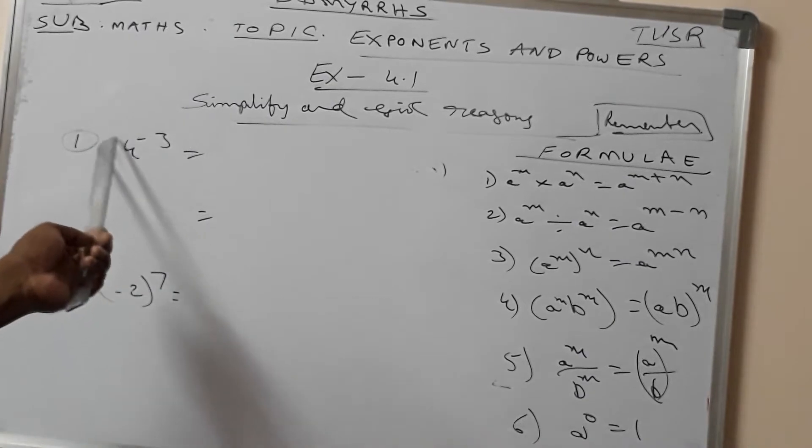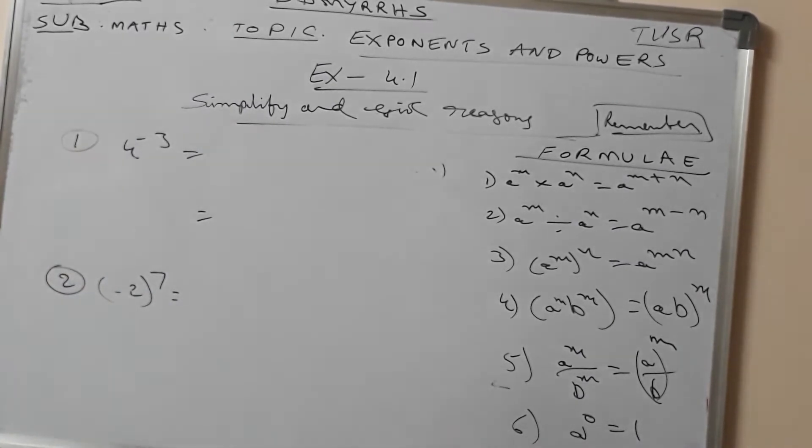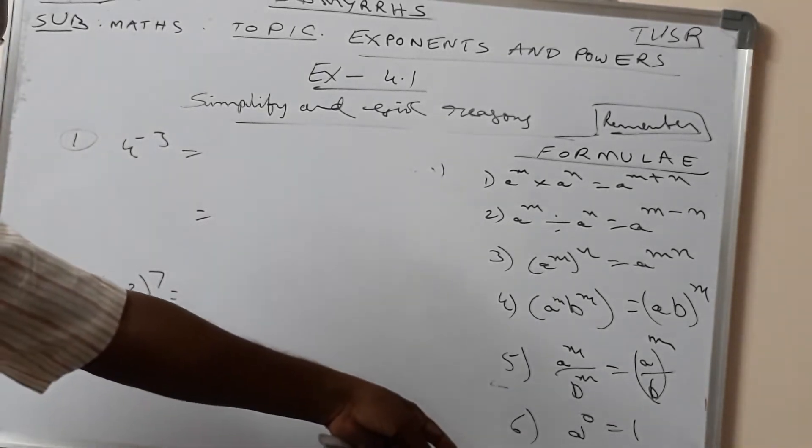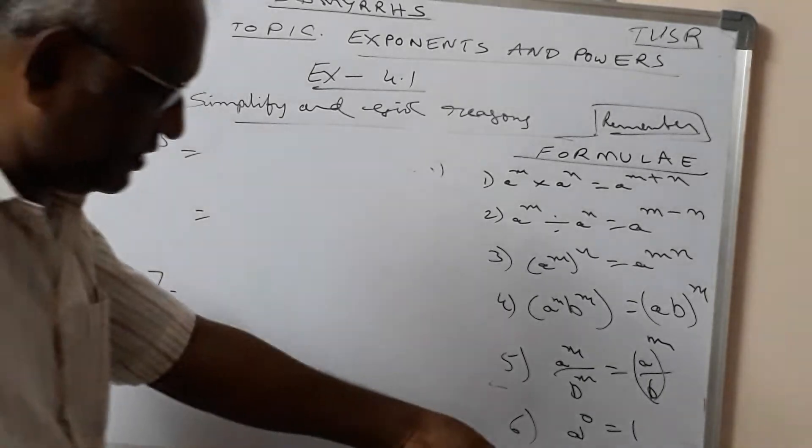Now, 4 to the power of minus 3. How to solve? We see the seventh formula: e to the power of minus n is equal to 1 by e to the power of n.